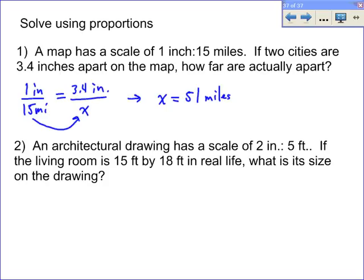Because if they're 3.4 inches apart on a map, then they're 51 miles apart in real life. The second one talks about an architectural drawing, and it has a scale of 2 inches to 5 feet. So again, automatically we know that this is our ratio to use.